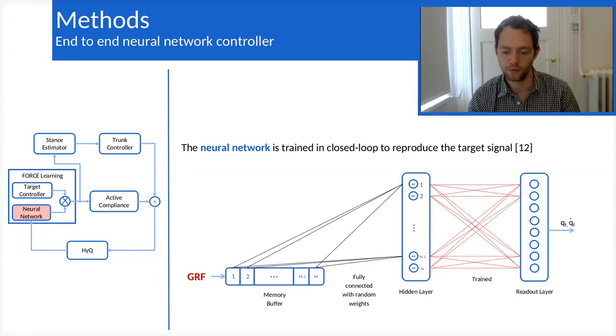As I told you, we inspired from closed-loop locomotion. So we made our algorithm rely only on ground reaction forces that are processed into a memory buffer and then neural network. This neural network predicts directly joint position and velocity. So it's completely an end-to-end neural network framework.